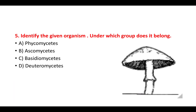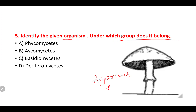Question 5: identify the given organism and the group it belongs to. By looking at the picture, we can say it is Agaricus, or mushroom, and it belongs to the group Basidiomycetes. So option C.